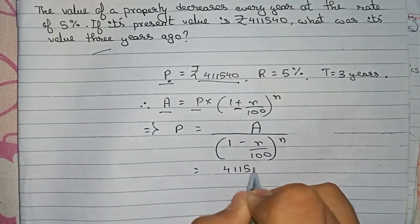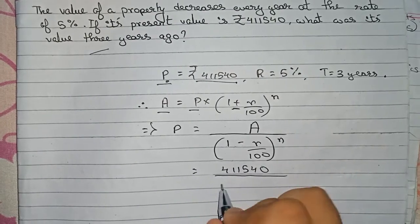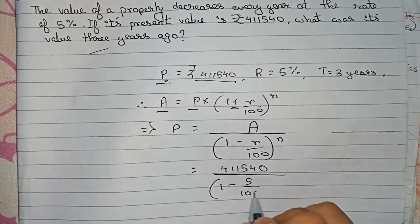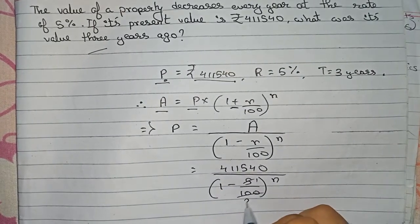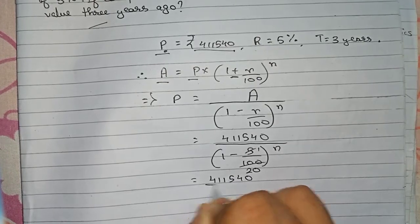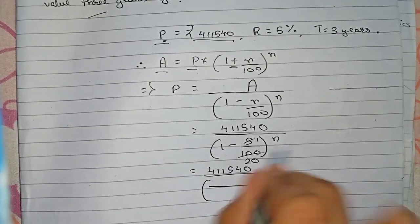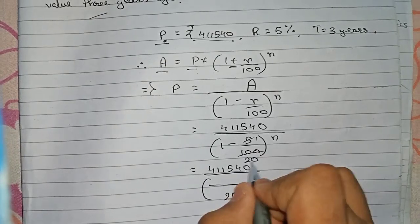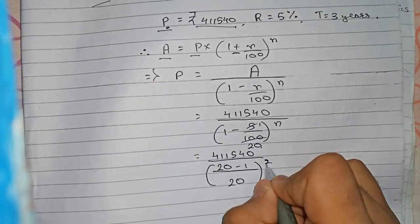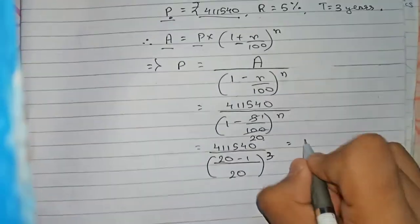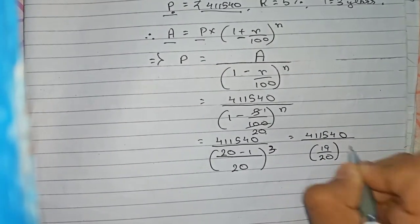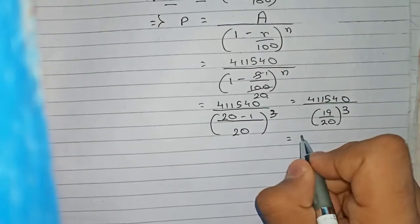Now substituting the values: Amount = 411540. Then 1 minus r/100 becomes 1 minus 5/100. We cancel 5 and 20 to get 19/20. So it becomes 411540 divided by (19/20)^3, which is 411540 divided by 19/19/19 over 20 to the power 3.